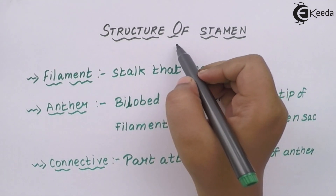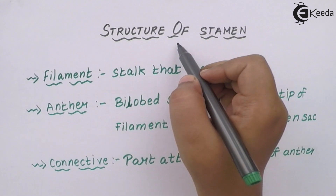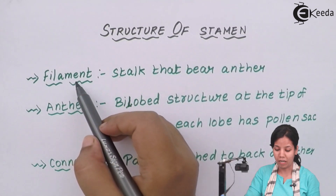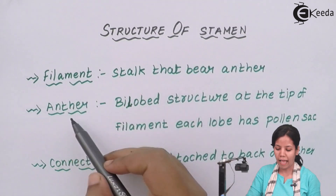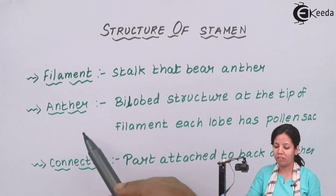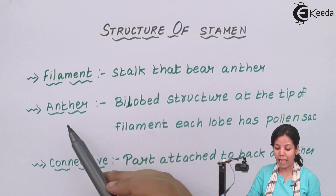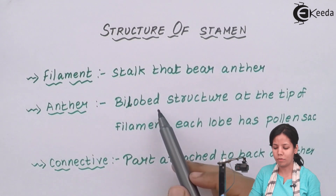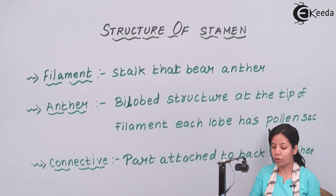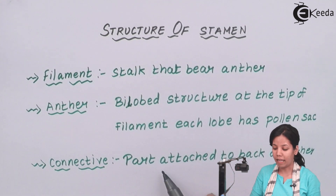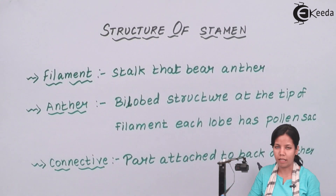The structure of stamen, or male gametophyte: stamen basically consists of filament, anther, and connective. Filament is a stalk that bears the anther, whereas anther is basically a bilobed structure. It has four pollen sacs, or sometimes a little more than that. Connective is a part attached to the back of the anther — it connects the anther basically.